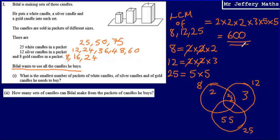However, we're not finished here. We're asked what is the smallest number of packets. Now we know that the number of candles that we need is 600, and actually we've just answered part two: how many sets of candles can Bilal make from the packets of candles he buys? We've already worked that out, that's 600. But what we need to know is how many packets he needs to buy of white candles, silver candles, and gold candles.